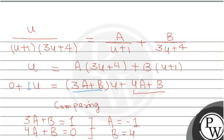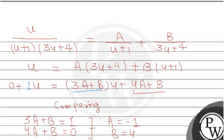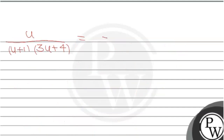Solving the system, we find A = -1 and B = 4. So, u / ((u+1)(3u+4)) = -1/(u+1) + 4/(3u+4). Substituting back u = x², we have the partial fraction decomposition in terms of x².